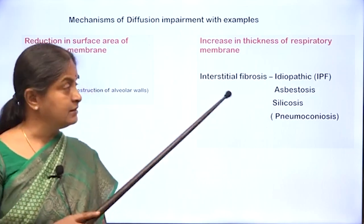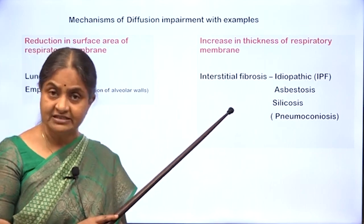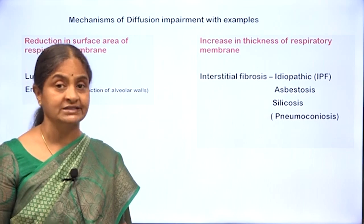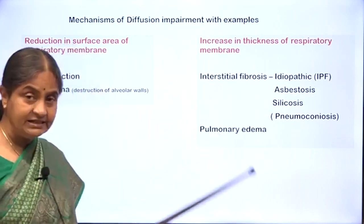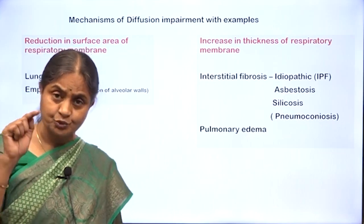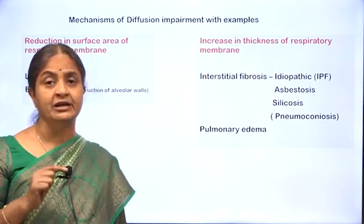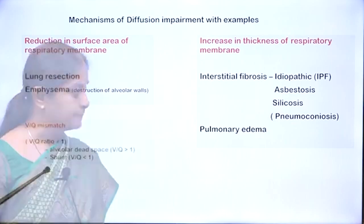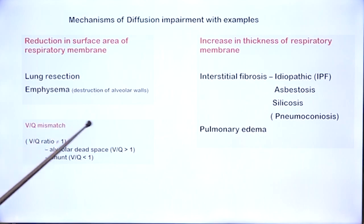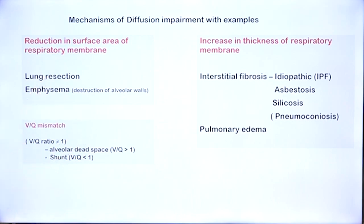So these are all examples where the pulmonary interstitium is thickened and therefore the distance through which gases have to diffuse increases. We have already seen that even if the interstitium is thickened, oxygen diffusion would be affected but not carbon dioxide diffusion. Pulmonary edema is an example of an acute condition where gases have to diffuse through a layer of fluid. VQ mismatch or ventilation perfusion mismatch is another condition which can be clubbed along with reduction in surface area of the respiratory membrane — we will discuss it in detail later.